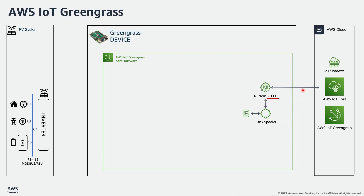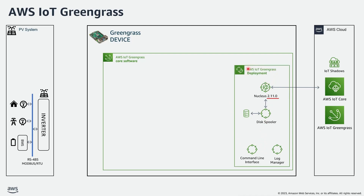I will show this feature in a specific demo by simulating lack of connectivity and forcing a system reboot. In addition, I deployed the command line interface, which is useful for development and troubleshooting, and the log manager to collect logs and send them to Amazon CloudWatch. These are both AWS-provided components. I consider all these components as the base deployment layer that I want applied to all my devices, so I defined a Greengrass deployment targeting a thing group named Octank Base.